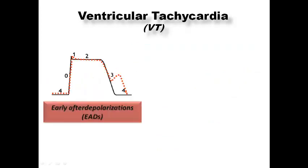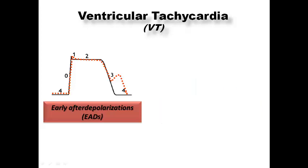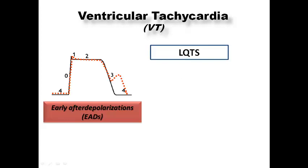The second mechanism for VT is triggered activity, with two subtypes: early afterdepolarization (EAD) and delayed afterdepolarization (DAD). EAD occurs near the end of phase 3, whereas DAD starts after the end of phase 3 or during phase 4. The two common examples of EAD-mediated VT are long QT syndrome and brady-dependent VT (also called pause-dependent VT).